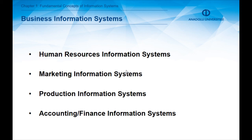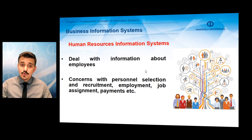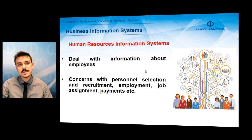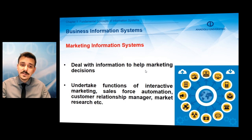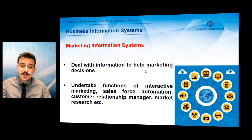In this video, we will briefly describe each of these information systems, with details available in the following videos. Human resources information systems deal with information about employees — including personal selection and recruitment, employment, job assignment, payments, and determination of salaries and wages. Marketing information systems deal with information to help marketing decisions, undertaking functions like interactive marketing, salesforce automation, customer management, marketing research, and online marketing.